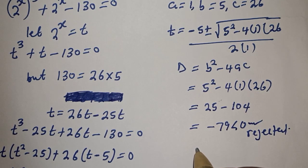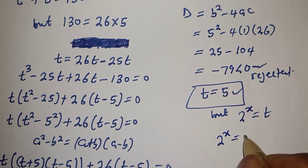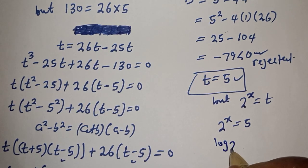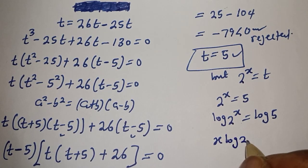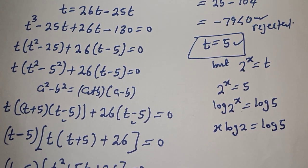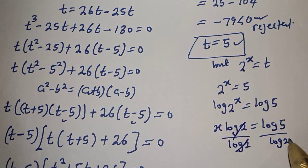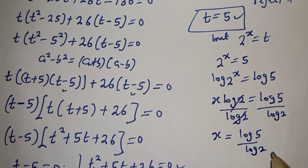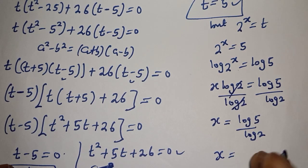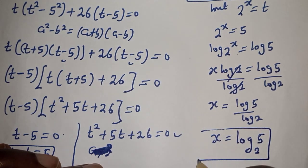The only real solution we have is t equals 5. But 2 raised to power s equals t, so 2 raised to power s equals 5. Taking the log of both sides: log 2 raised to power s equals log 5, so s times log 2 equals log 5. Dividing both sides by log 2, s equals log 5 over log 2, therefore s equals log base 2 of 5. This is the final answer.